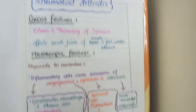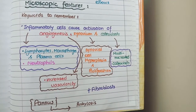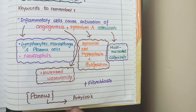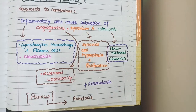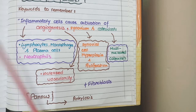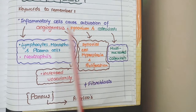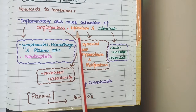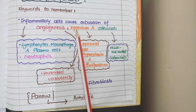Now for microscopic features, rheumatoid arthritis has a complex pathophysiology. If we summarize this pathophysiology into one single line, it will help you remember the microscopic features. The keyword phrase to focus on is: in rheumatoid arthritis, the inflammatory cells cause activation of angiogenesis, synovium and osteoclasts.